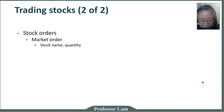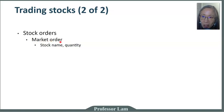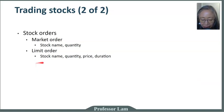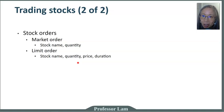Now that you're ready to buy and sell stocks, how do you place your order? The most common type of order is a market order. To place a market order, you only need two pieces of data: the name of the stock you want to buy and how many shares. In addition to a market order, you can place a limit order. With a limit order, you provide three pieces of information: the name of the stock, how many shares, and the price you're willing to pay.